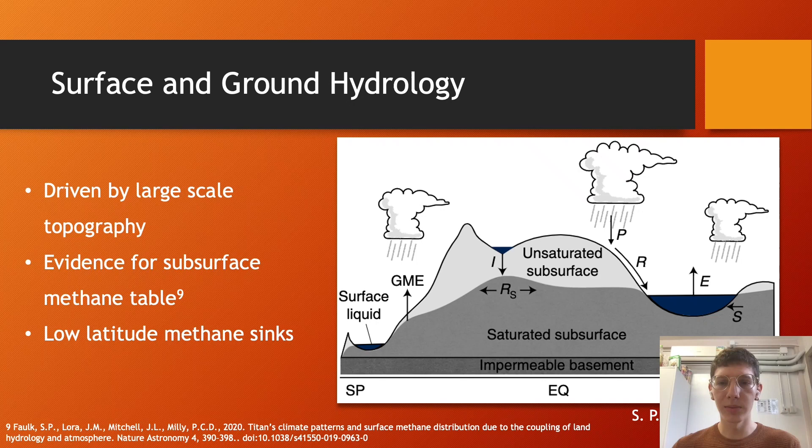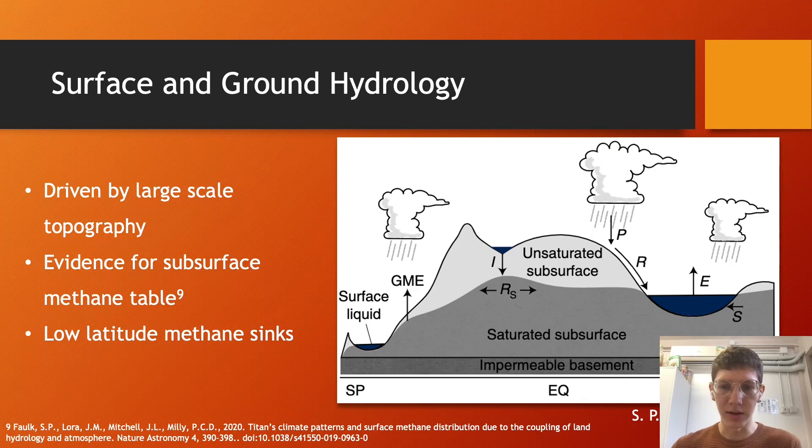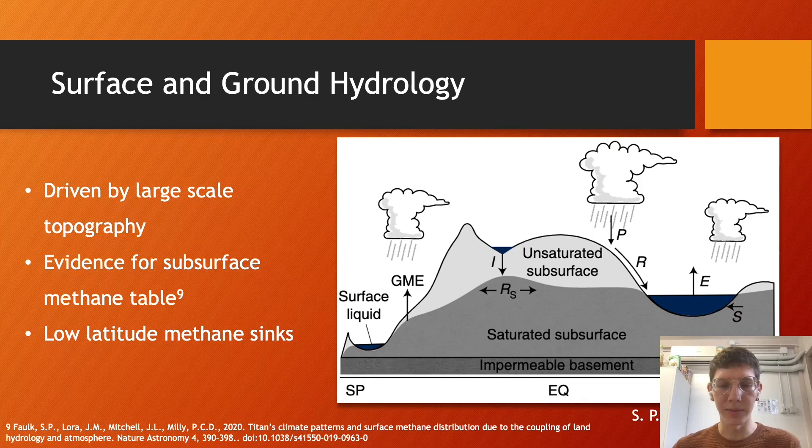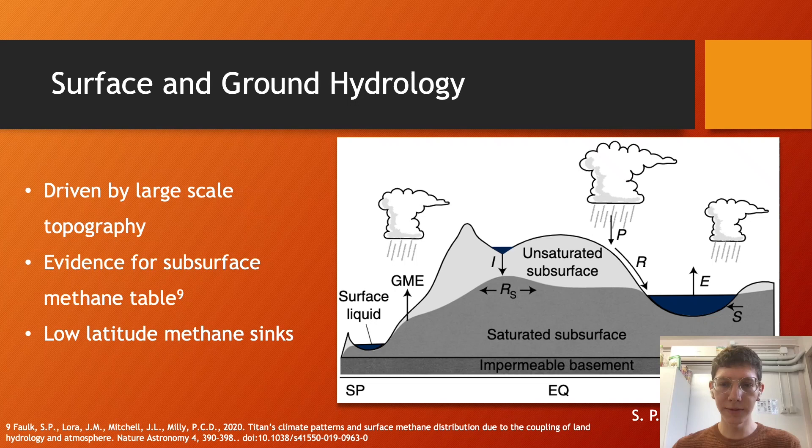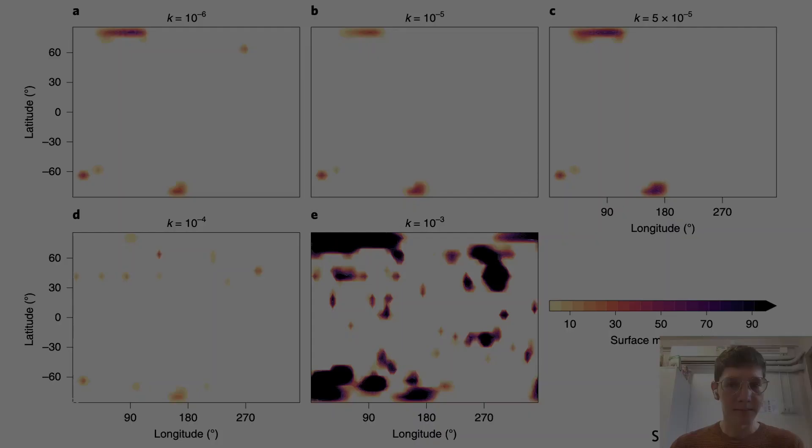The atmosphere deposits methane into the low latitudes to be infiltrated, while surface and subsurface transport routes methane into high-latitude basins, which then feed the atmospheric moisture. This subsurface transport occurs through lateral flow of fluid in aquifers, dominantly through fractures and depending on active aquifer thickness, hydraulic conductivity, porosity, and the hydraulic gradient.